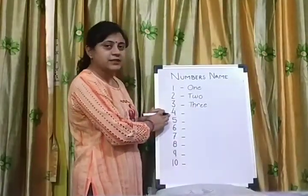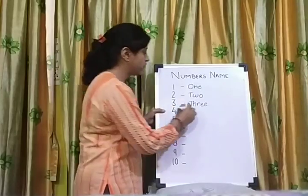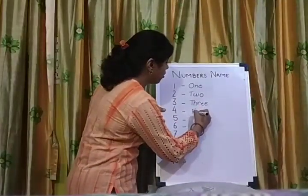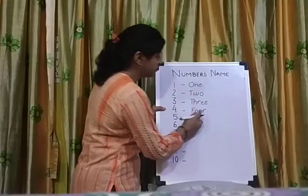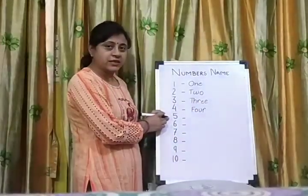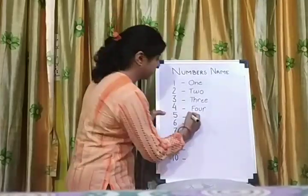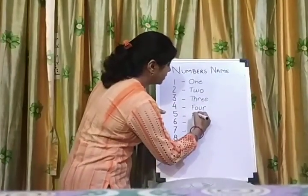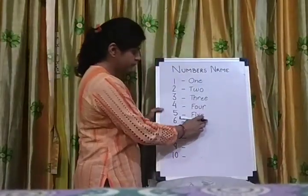What is this? This is four. The spelling of four is F-O-U-R. Four. Which number is this? This is five. The spelling of five is F-I-V-E. Five.